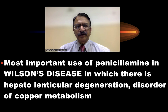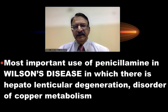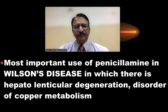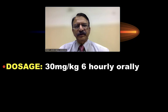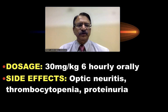The most important use of penicillamine is in Wilson's disease, in which there is hepatolenticular degeneration because of disordered copper metabolism. Its dosage is 30 mg per kg 6-hourly orally. Side effects can include optic neuritis, thrombocytopenia, and proteinuria.